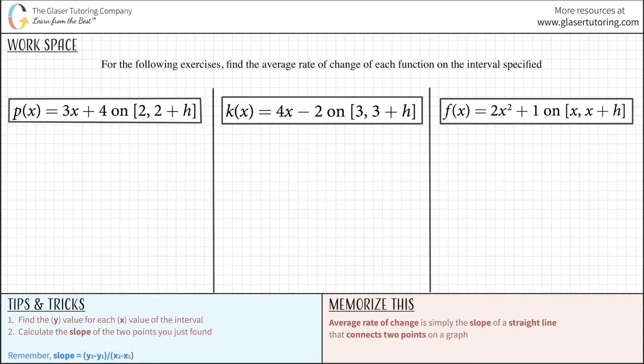So, basically, when we have p(x) = 3x + 4, on this interval, they are telling us the x values of the two points. This value here represents x1, we'll call it, and this value over here, where it says 2 + h represents x2. So, all we have to do is take each x value, plug it in here for x, and then find the corresponding y value, or aka p(x) in this case. Those are the steps I listed down here.